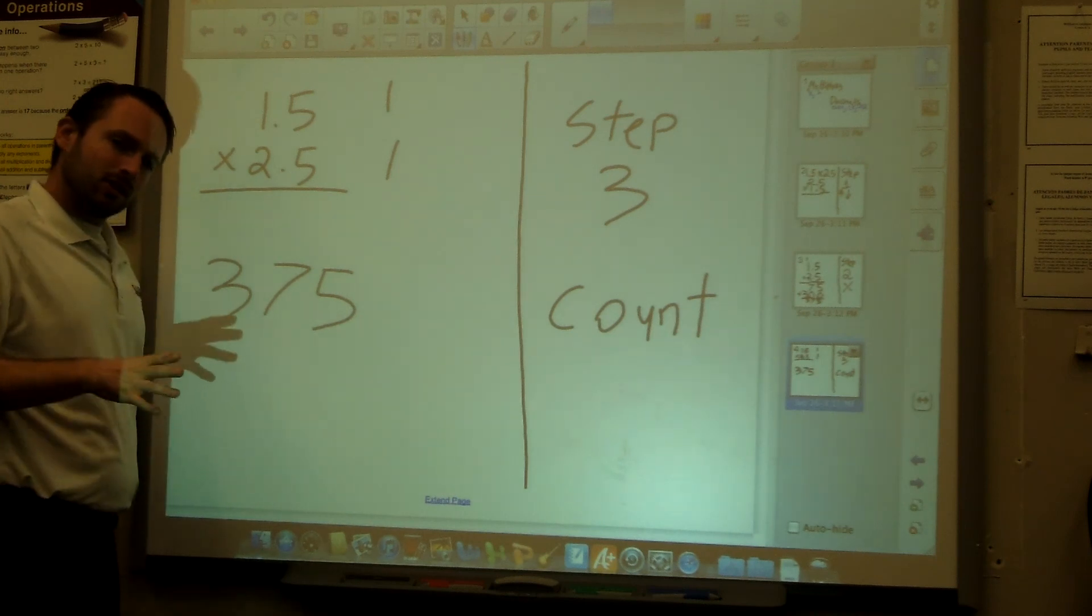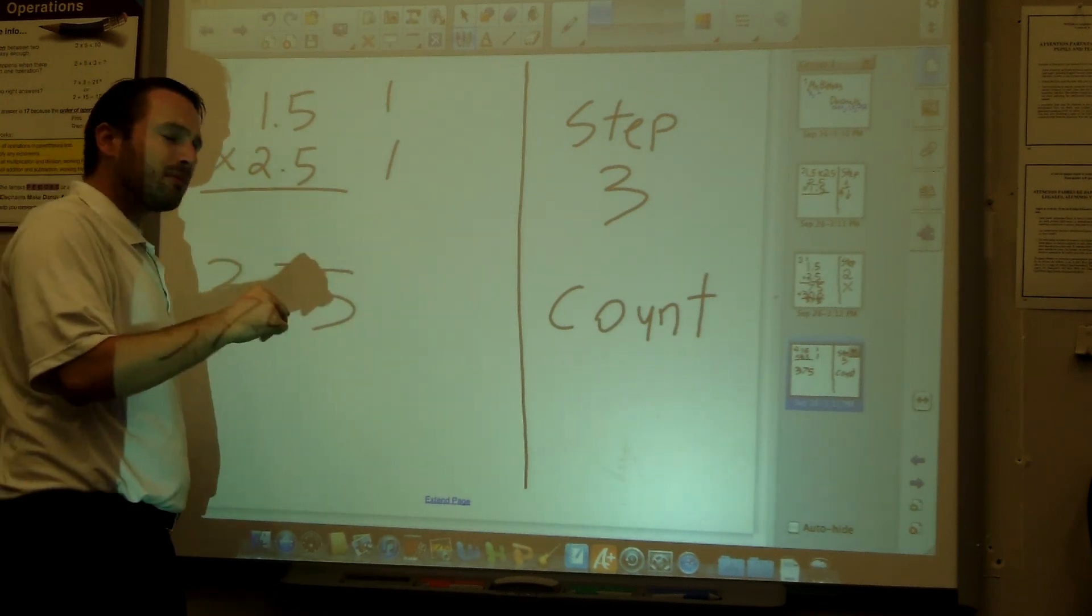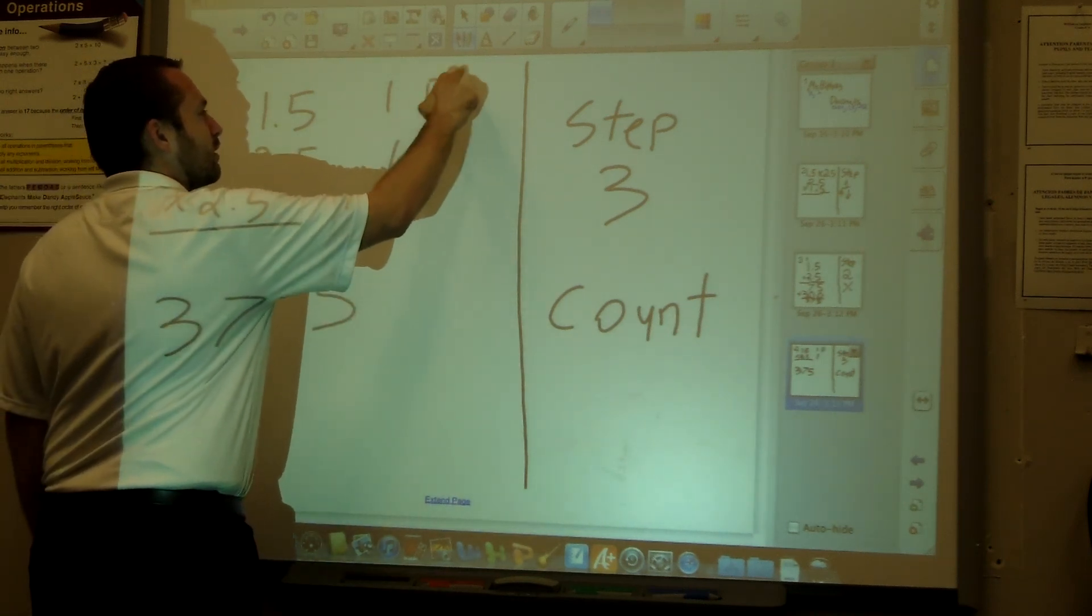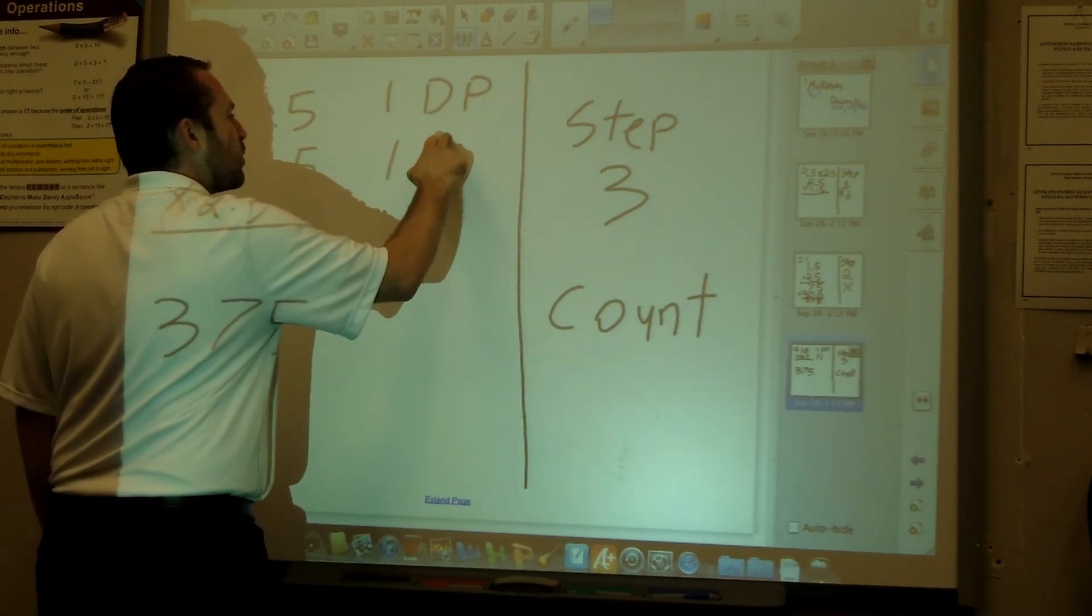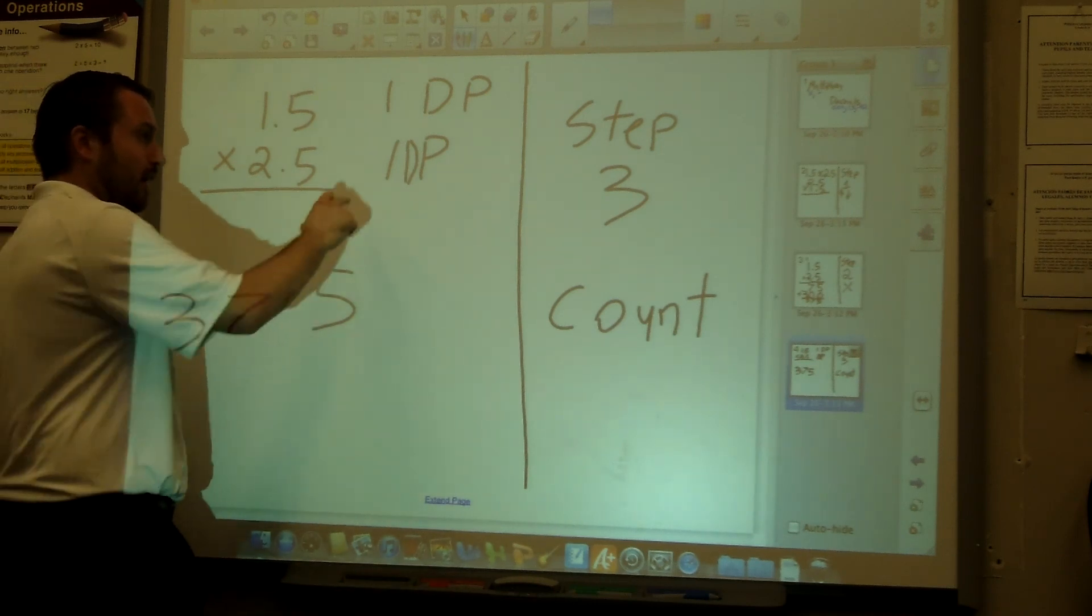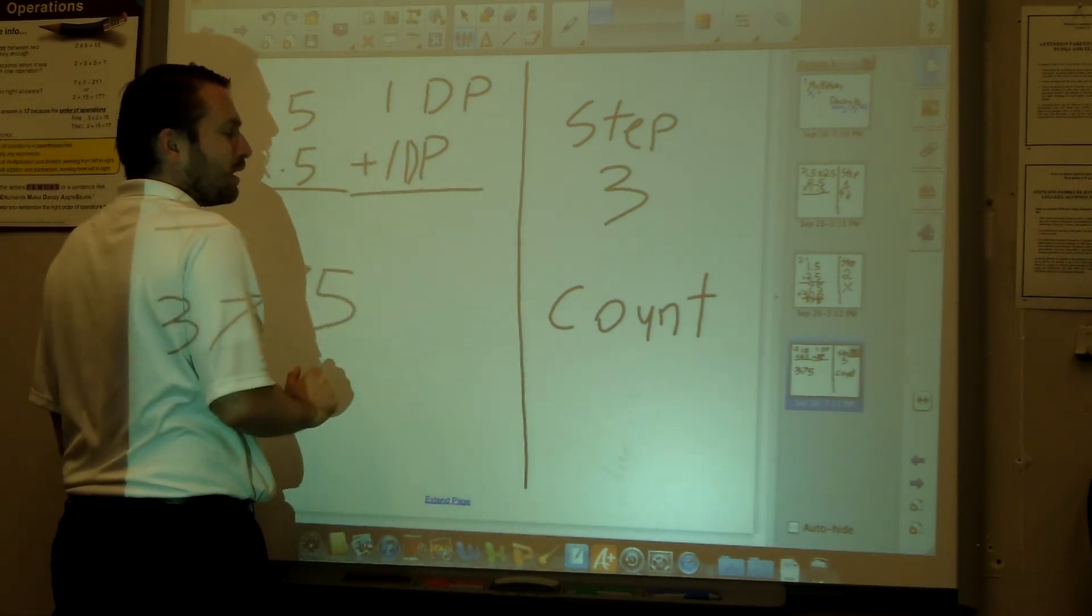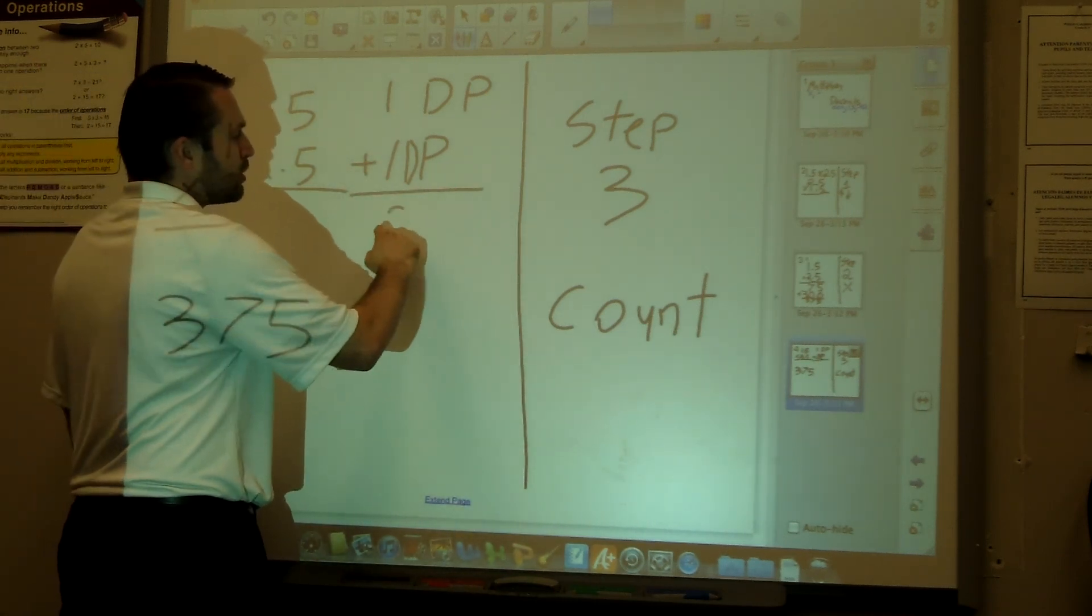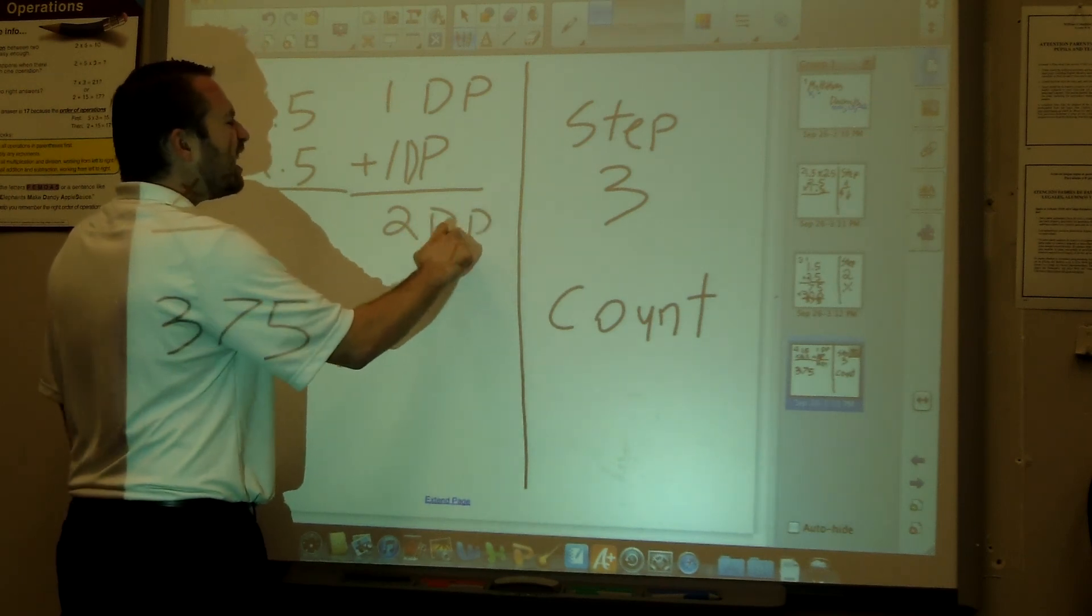And just so I don't get confused, I'm gonna go back and make sure I write DP, or decimal place. There we go: one DP and one DP. I'm gonna add those up and I get two DP. It's like a separate little problem that you're gonna solve.